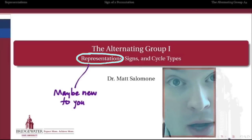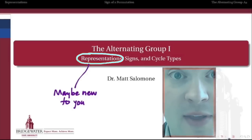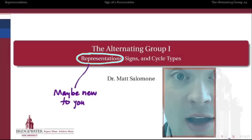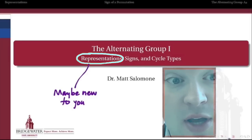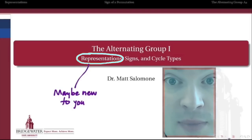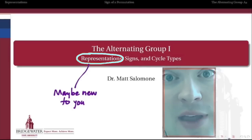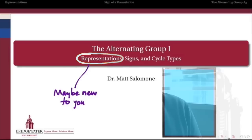After we talk about what representations are in a general context, we'll see how to think of the alternating group in the context of representations of objects in the symmetric group. Really, the alternating groups are just subgroups — actually normal subgroups, as you will show — of symmetric groups where the permutations in those subgroups have a certain property called a sign property that we're going to talk about in this video.